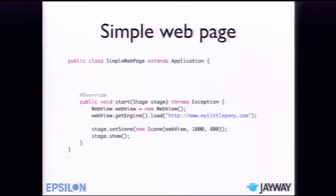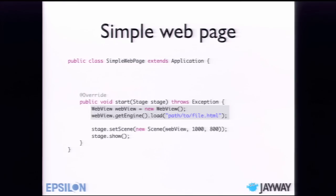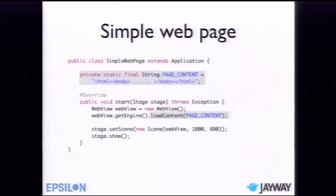Looking at the code: in the start method, you create a WebView and invoke webView.getEngine().load() with a URL — that's how you load a web page. If you want to load a page bundled with your application, you provide the load method with a path to your local file. And if you just want to display a small piece of hard-coded HTML, you can use loadContent() instead.